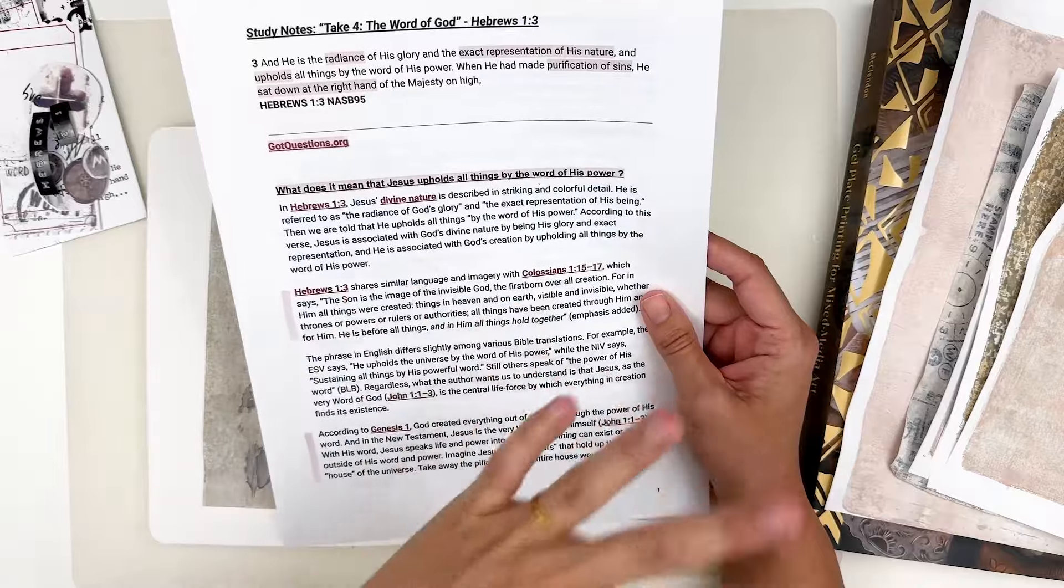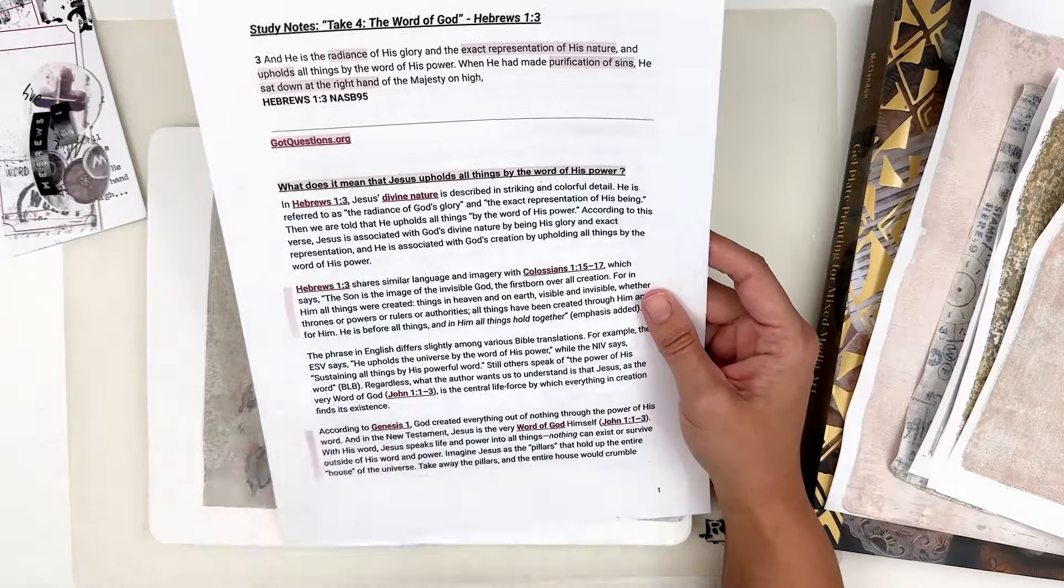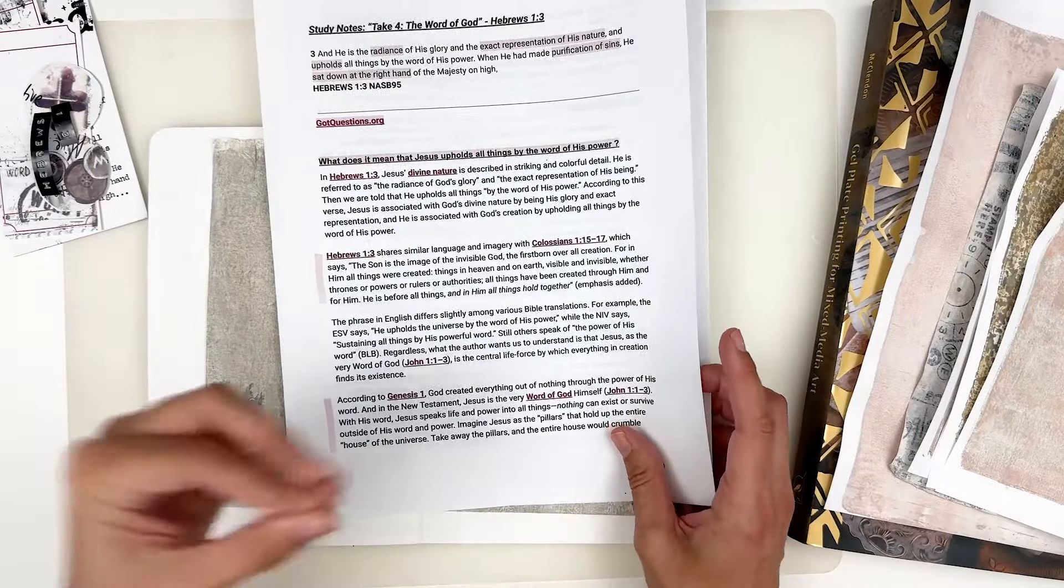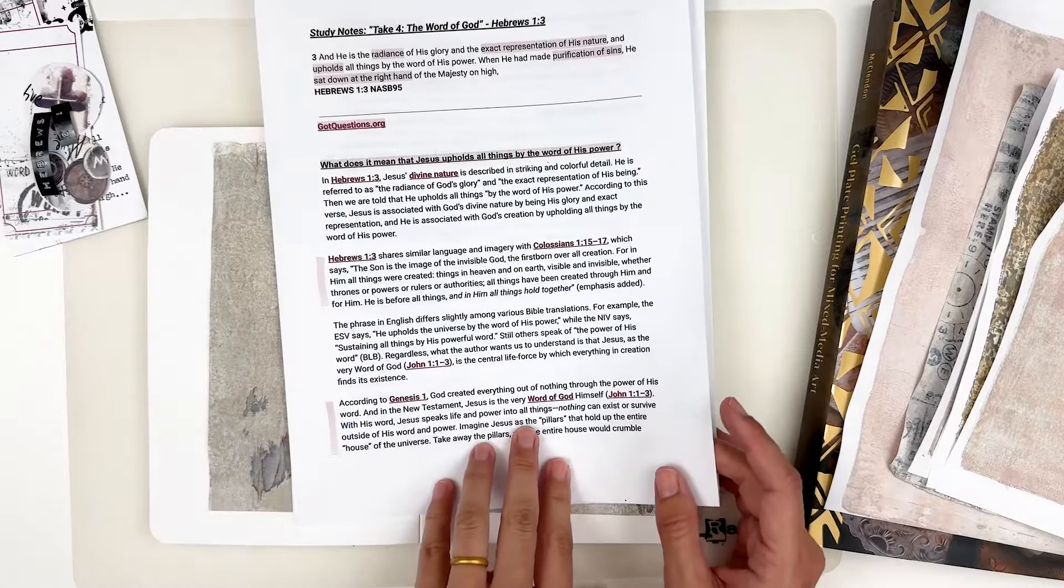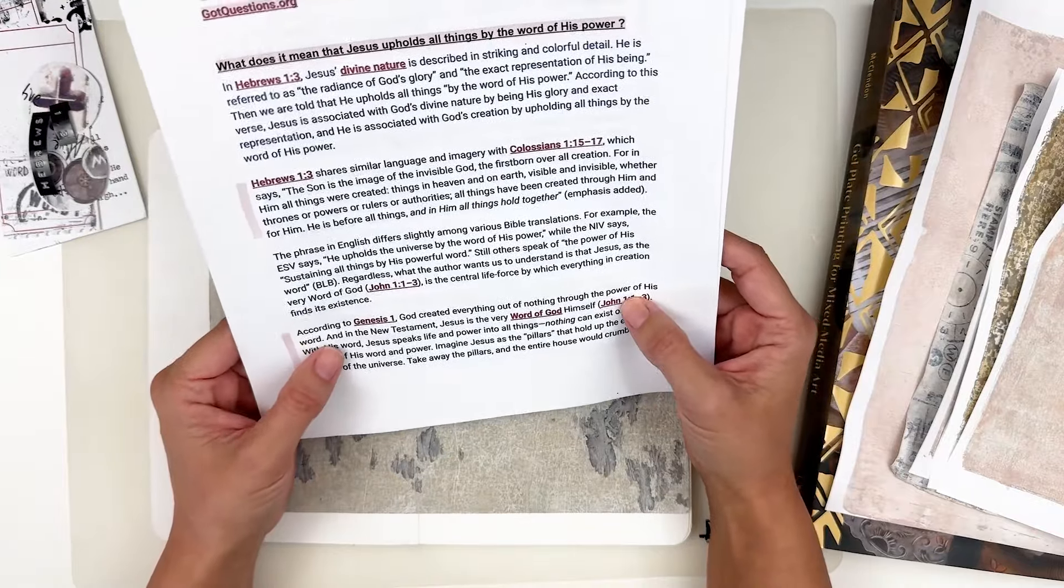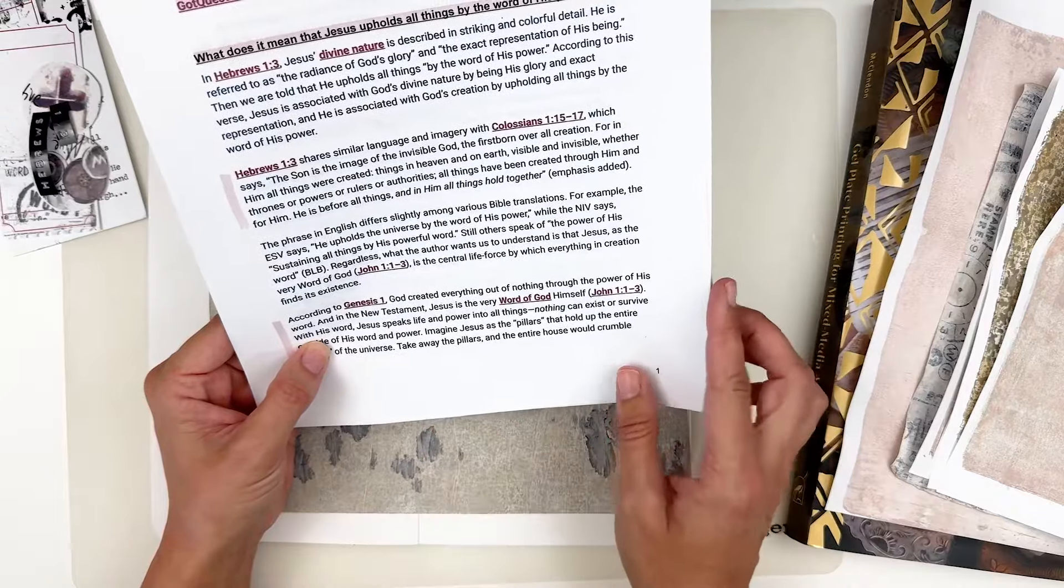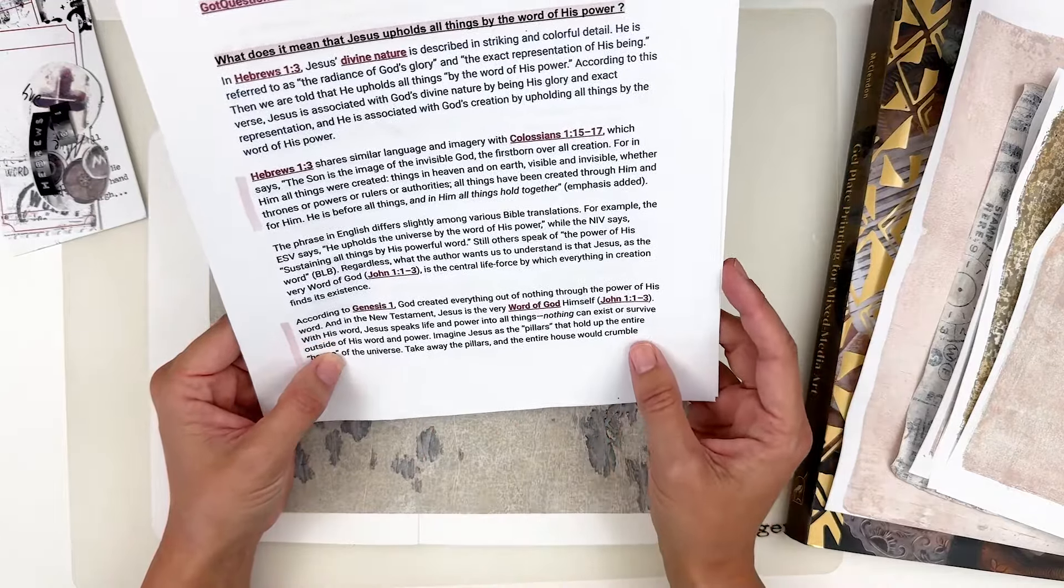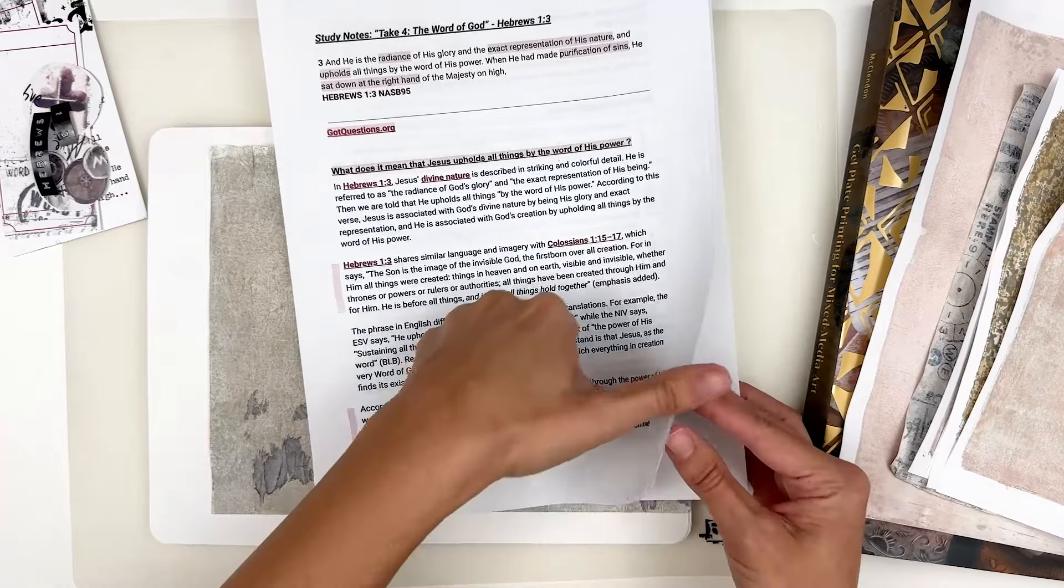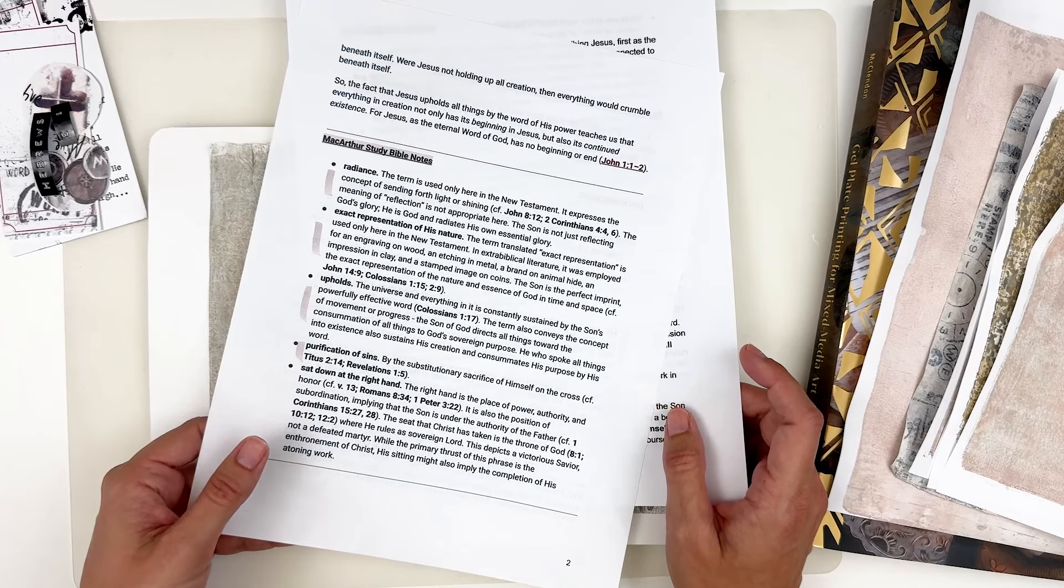As we've been working through this particular study, just this reoccurrence of this theme of the supremacy of Christ talking about the Godhead, the Trinity, we've talked about that. Jesus being present at the very beginning of humanity and just the creation of everything Jesus was present for that. And so that's something that we've seen throughout the notes as we've looked at these various scripture. And so I just love that we are getting that real. There's just no question about it when you're seeing all of these verses referencing something similar.